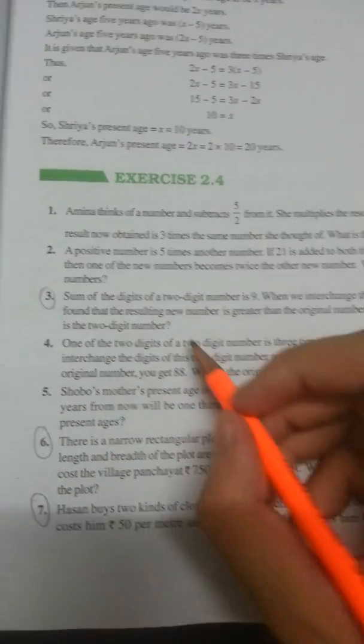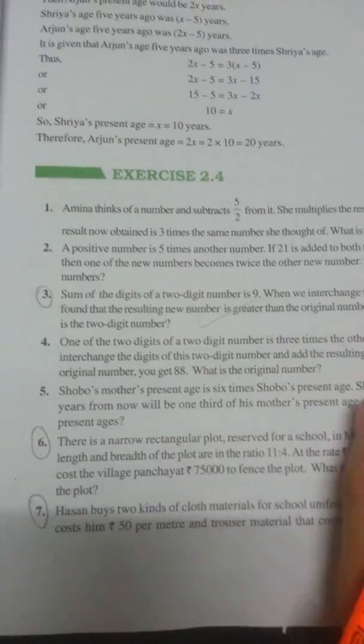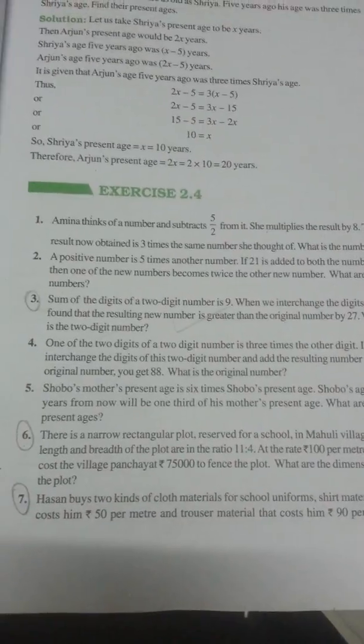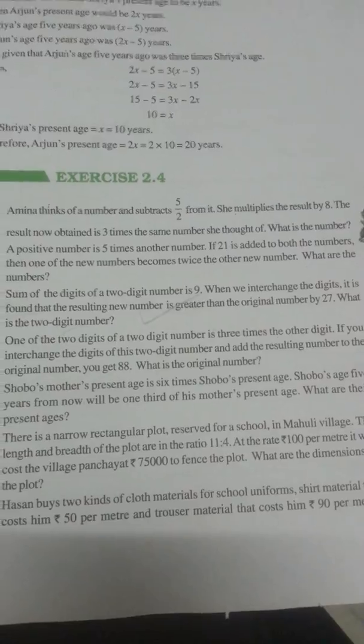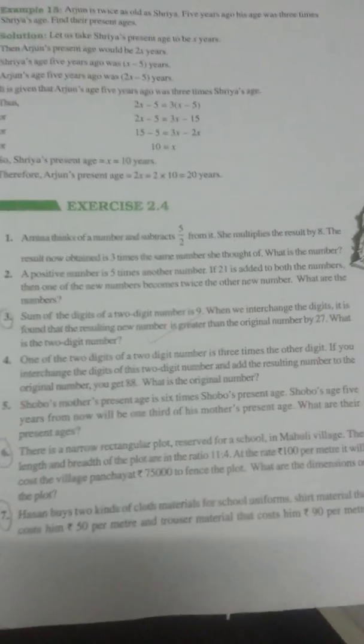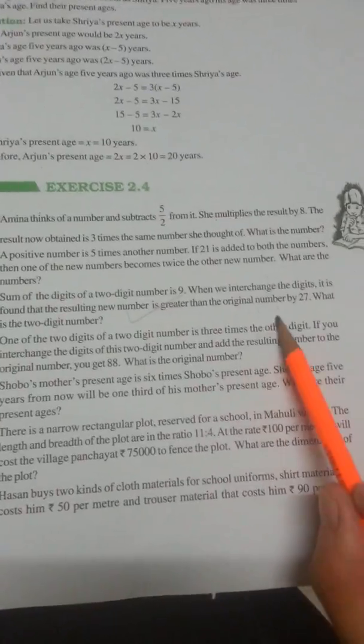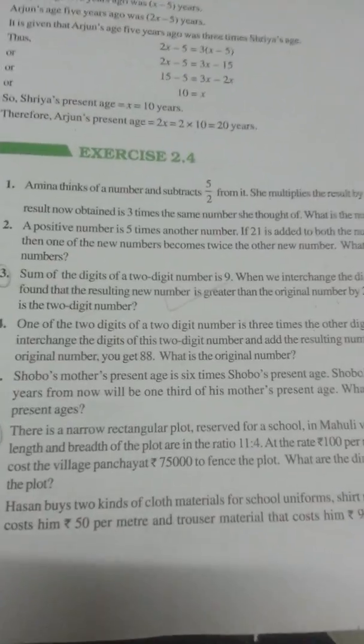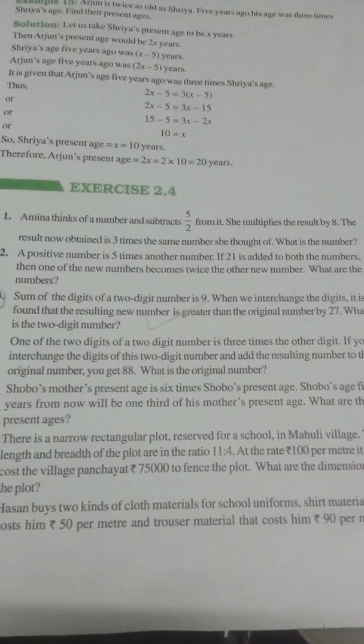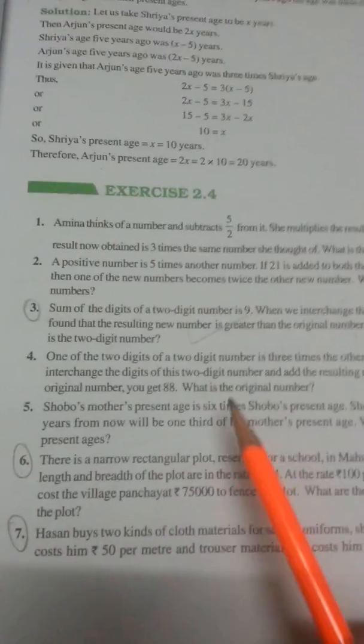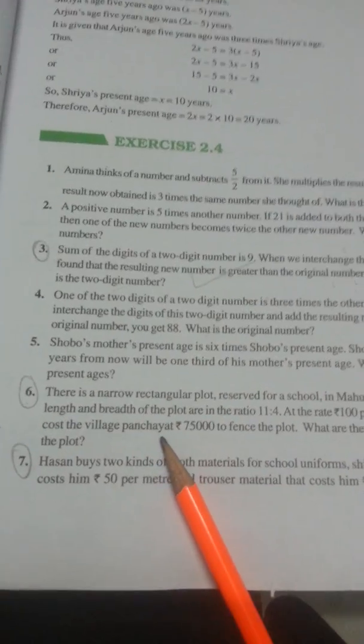Question 3 in Exercise 2.4 — the interchange question — is one you need to keep in mind because it can make a difference in your result. I have seen question papers from other schools and this question appears as such. Questions 6 and 7 are also very important. You must also do Example 16 because it is a perfect question to be asked.